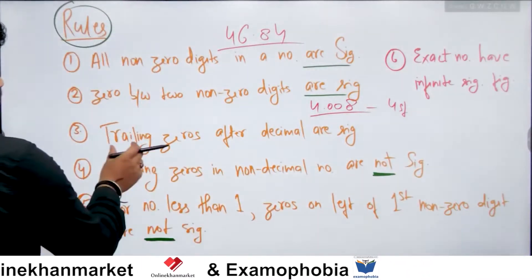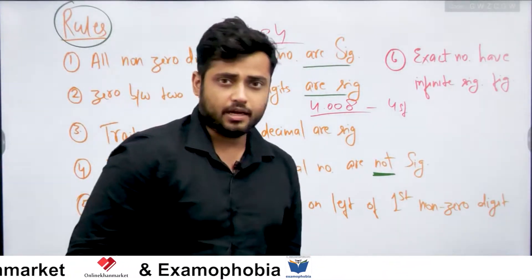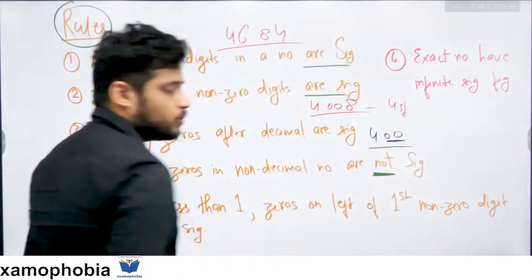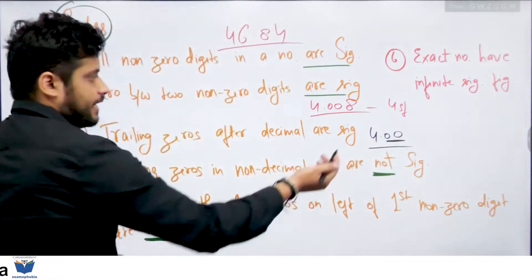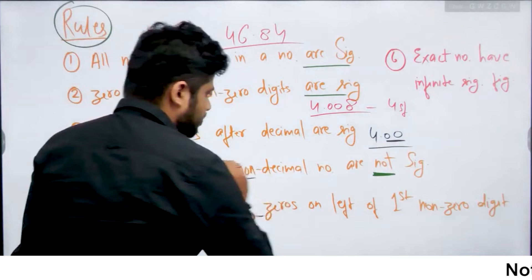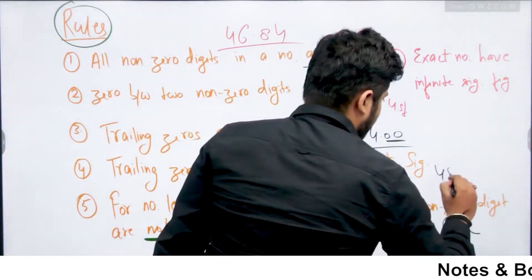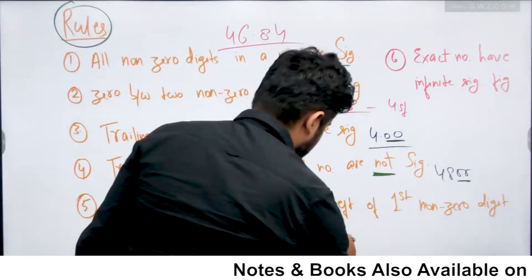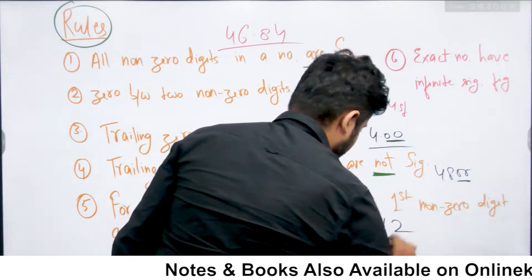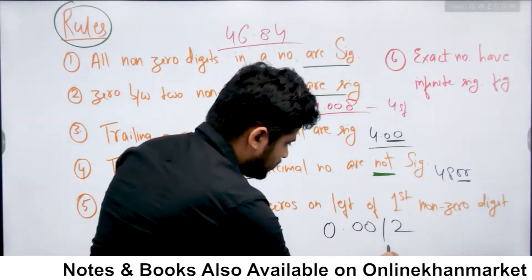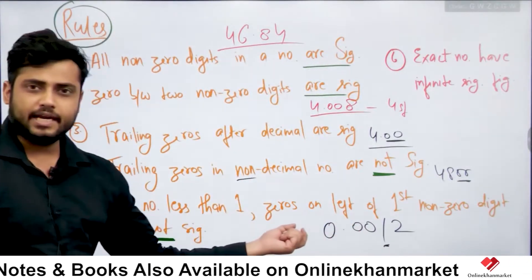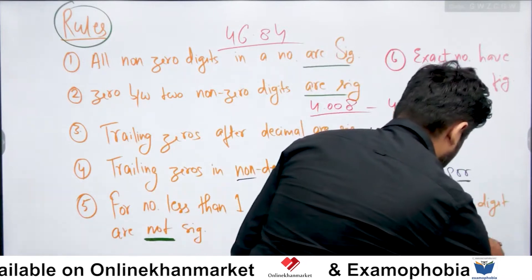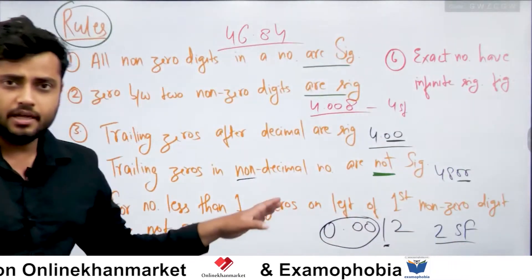Uske baad humne dekha, that trailing zeros after the decimal are significant. Agar decimal point ke baad, for example 4.00, hamaari trailing zeros hain — aaakhri wali jo zeros hain — yeh bhi significant hongi, agar decimal number hai. Lekin agar hamare paas non-decimal number hai, for example 4800, to yahan par jo trailing zeros hain woh significant nahi hongi. Phir last mein apne dekha tha, agar aapka number 1 se chhota hai, to jo first non-zero digit hai usse pehle wali saari ki saari zeros aapki non-significant hongi. Toh is number ke andar significant digits hain 2 — there are 2 significant digits in 0.0012.